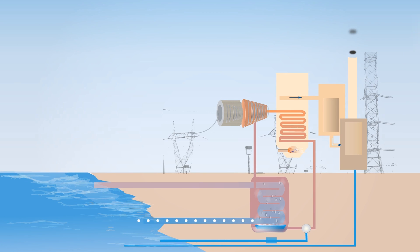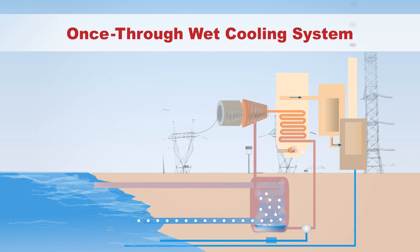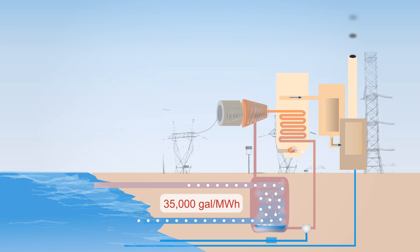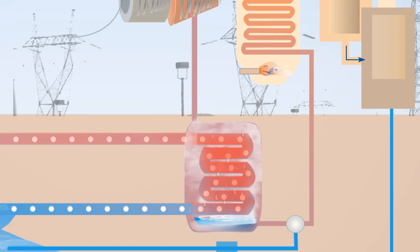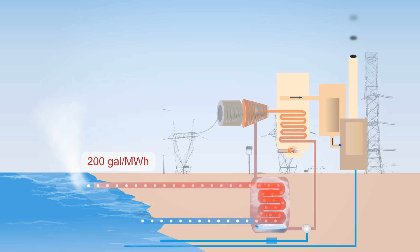A typical coal-fired power plant with a once-through wet cooling system withdraws about 35,000 gallons per megawatt-hour of electricity generated, but returns most of it to the source. After the water is withdrawn from the river, lake, ocean, or reservoir, it is used to condense steam in the power plant. In the condenser, it absorbs heat from the steam and is then returned to the source, with 200 gallons lost to evaporation per megawatt-hour produced.